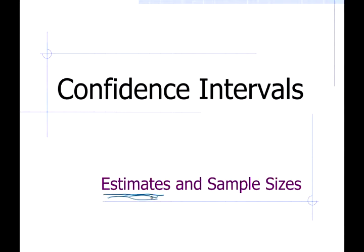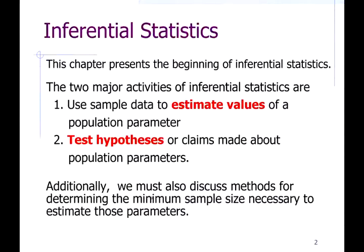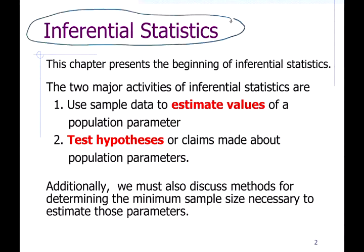We're going to extend on that and talk about a confidence interval estimate. Generally, this branch of statistics called inferential statistics has two main topics: using information about data to estimate values we can't calculate directly, and testing hypotheses or claims made about a population.